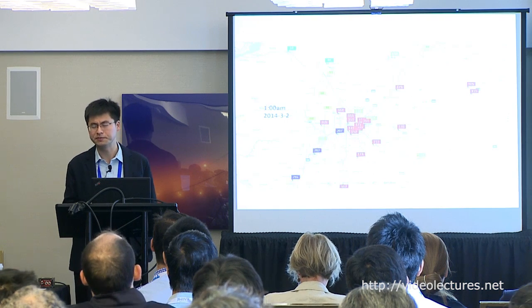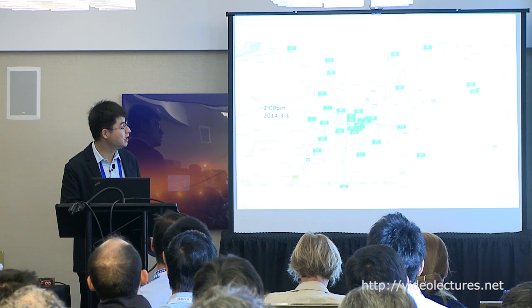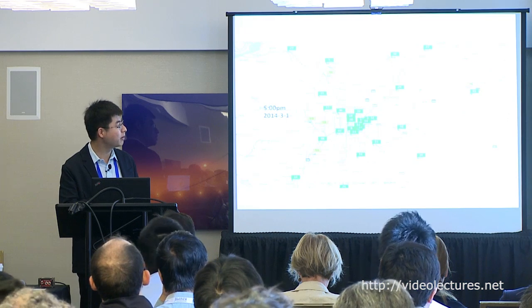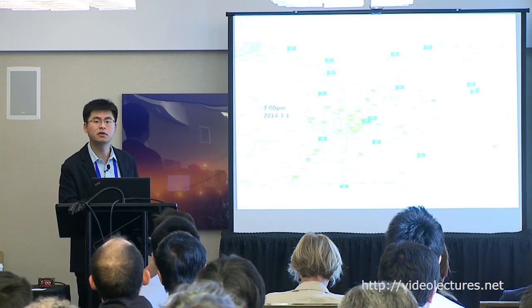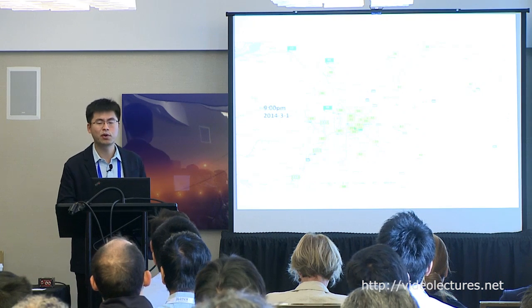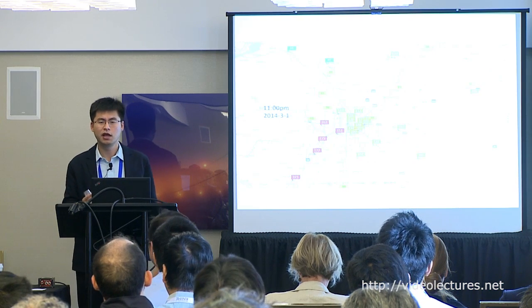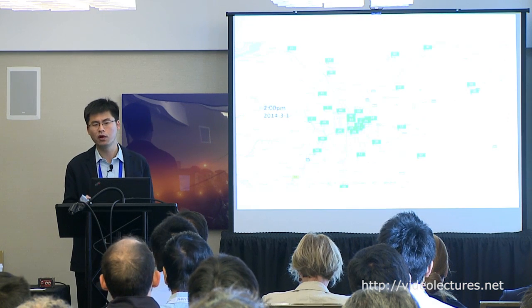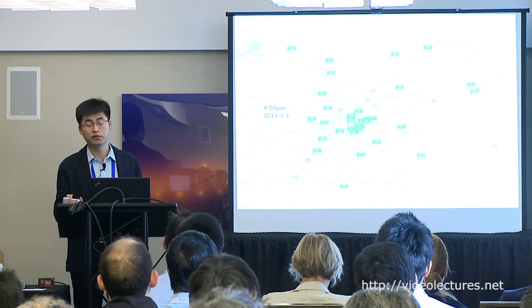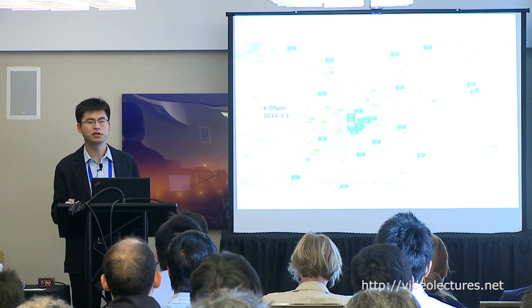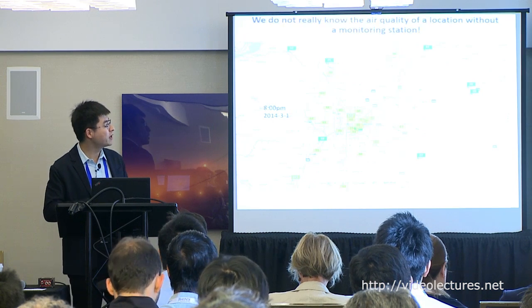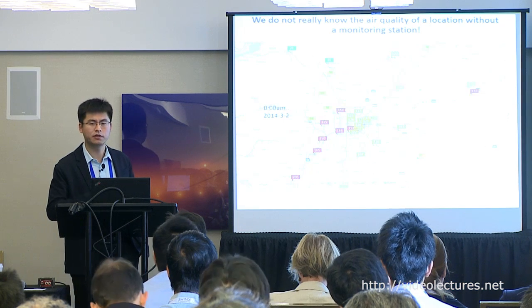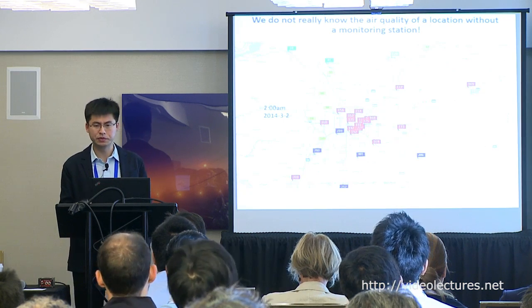Even at the same moment, readings from nearby stations can be dramatically different. This is not surprising — air quality is influenced by multiple complex factors such as traffic flow, land use, building density, and fine-grained meteorological conditions. The problem is we cannot understand the air quality in places without a monitoring station.